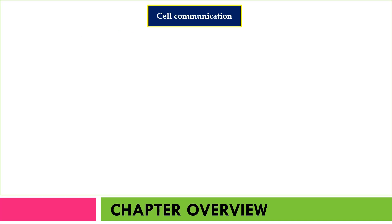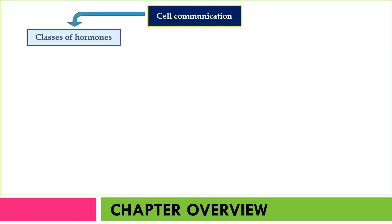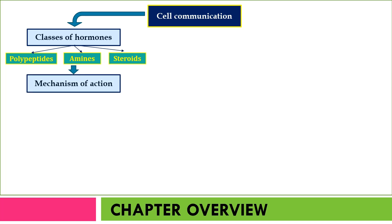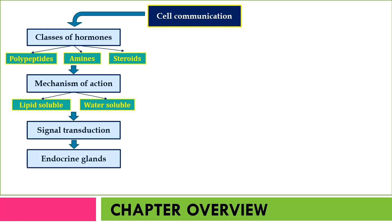Let's look at the chapter overview. In this chapter on cellular communications, you are going to learn about the classes of hormones, the mechanism of actions for the hormone, signal transduction and endocrine gland — that is the part on the endocrine system.